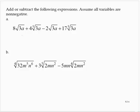So again, there are some like radical terms here. I have 8 times the square root of 3a and minus 2 times the square root of 3a. Those are like radical terms, so that would give me 6 times the square root of 3a.